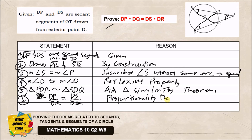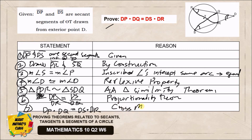For statement number seven, we apply cross multiplication to our proportion. The resulting final statement is: DP times DQ equals DS times DR. The reason is cross multiplication, or equivalently the Multiplication Property of Equality. This completes our proof that the product of the whole and external parts of one secant equals the product of the whole and external parts of the other secant.